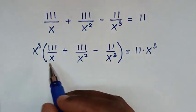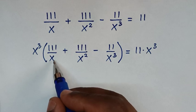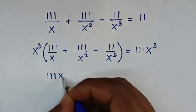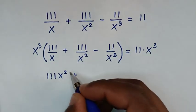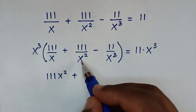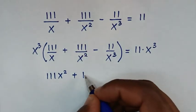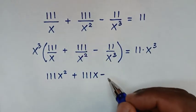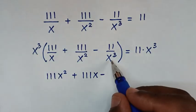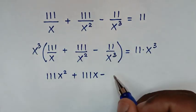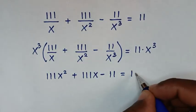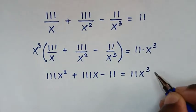Then x power 3 divided by x is x squared, and x squared times 111 gives 111x squared. Plus x power 3 divided by x squared is x, and x times 111 gives 111x. Then minus x power 3 divided by x power 3 is 1, and 1 times 11 is 11. This equals 11x power 3 on the right side.